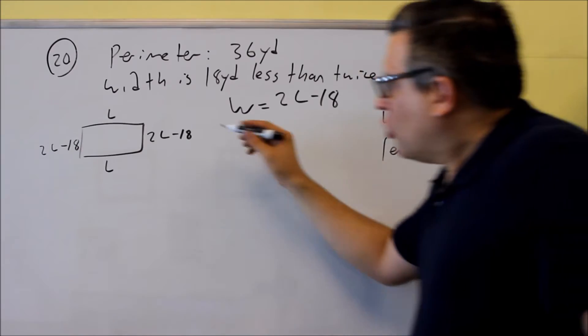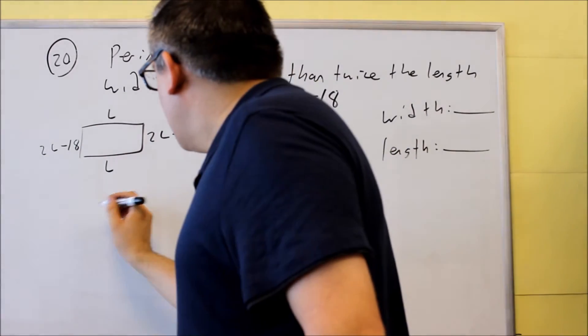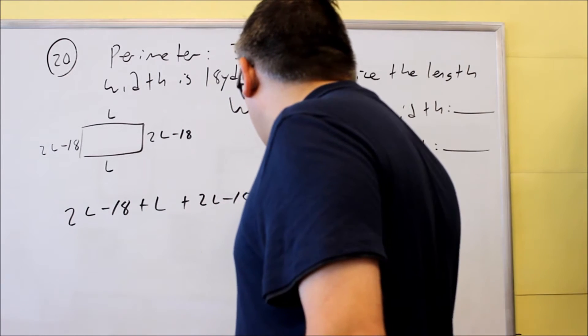So how do we find the perimeter? We add all the sides all the way around. So I have 2L minus 18 plus L plus 2L minus 18 plus L.